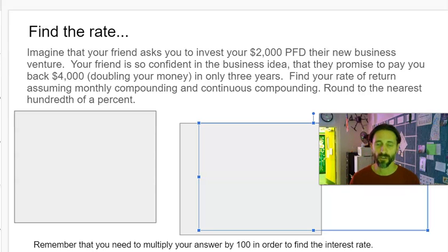In this video I want to go through how to solve a classic problem in finance which involves finding the rate. Imagine your friend has said, hey I've got this great business idea, I'll double your money in three years. Essentially, what rate are you being given?